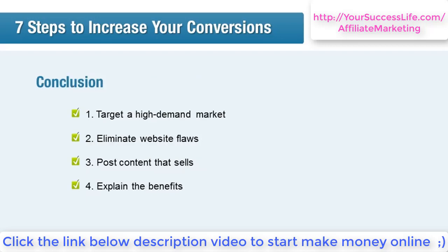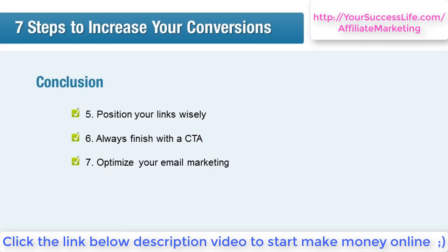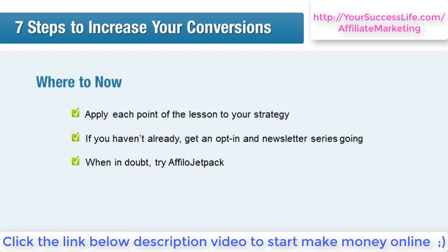Overall, if you want to increase your conversions: start with a targeted market, eliminate any website flaws, include content types that really sell, explain the benefits not just the features, place your links where they will be desired, use calls to action, and use your email marketing strategy smoothly. If you struggle to optimize elements crucial for converting — such as market research or content creation — try AfiloJetpack. It comes with research reports, a selection of good affiliate programs to promote, and pre-built content including a full newsletter series.